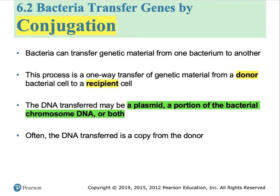The next section talks about conjugation — the ability of a bacterial cell to transfer material from one to a neighboring cell. It's a one-way transfer of genetic material from the donor cell to the recipient cell. Once the recipient cell has received its copy of the genetic material, it may become a donor cell itself. In a hospital setting, one cell with a resistant antibiotic plasmid can spread that to others, becoming a tsunami that spreads throughout the environment. Conjugation can lead to transfer of a plasmid, a portion of the bacterial chromosome, or both.